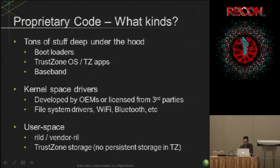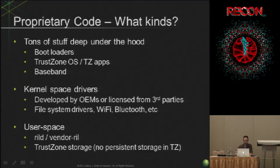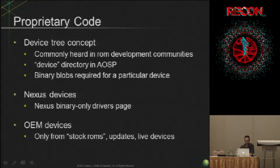TrustZone doesn't have any persistent storage other than a very small amount of space in internal RAM. So they use a user space daemon that talks to a kernel module, which then talks to TrustZone. It keeps asking 'do you guys have anything for me to do?' and TrustZone will give it encrypted file system contents to store locally. They've got this whole chain — I understand secure RAM is expensive.